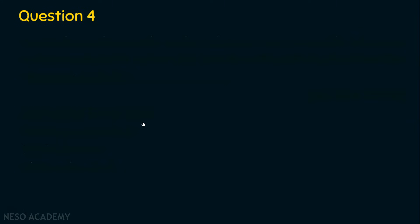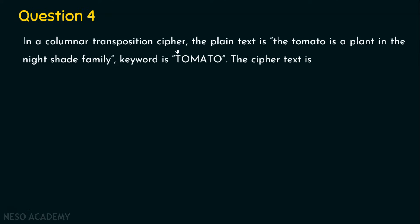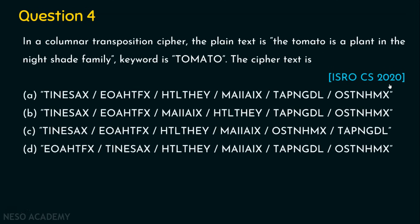Let's move on to question number 4. In a columnar transposition cipher, the plaintext is: 'the tomato is a plant in the nightshade family,' and the keyword is 'tomato.' What is the ciphertext? This question was asked in ISRO Computer Science 2020. Options A, B, C and D are given. The plaintext is 'the tomato is a plant in the nightshade family' and the keyword is 'tomato,' using the columnar transposition algorithm.